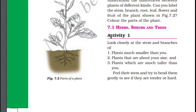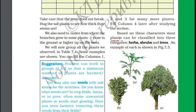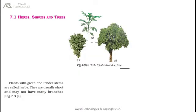Now let us see Activity One. Look closely at the stem and branches of plants — plants much smaller than you, plants which are about your same height, and plants which are much taller than you. Generally, plants could be classified as herbs, shrubs and trees.